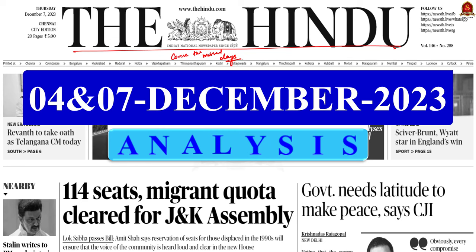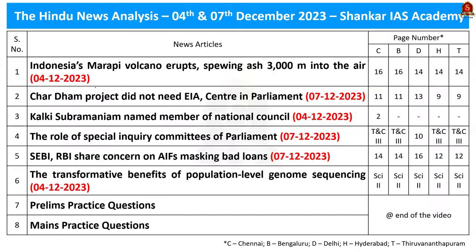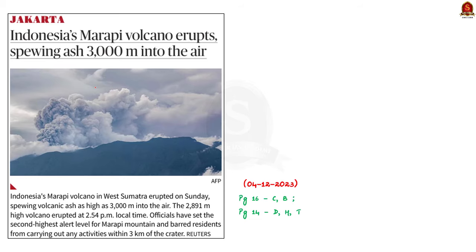Today we shall cover important articles from the 4th and 7th of December. Displayed here are the news articles which we are going to discuss today. This news article from the Hindu Newspaper reports about the eruption of Marapi Volcano in West Sumatra Island of Indonesia. In this news analysis discussion, let us understand the basics of volcanoes and their mechanism.